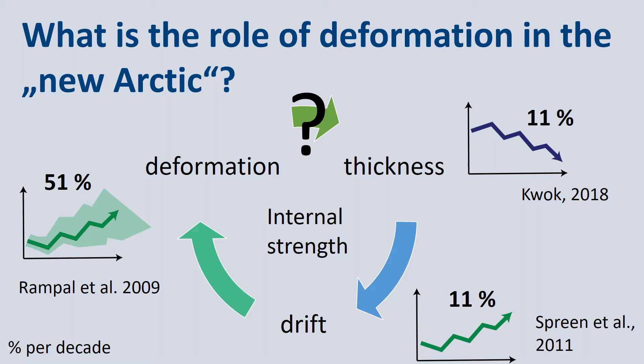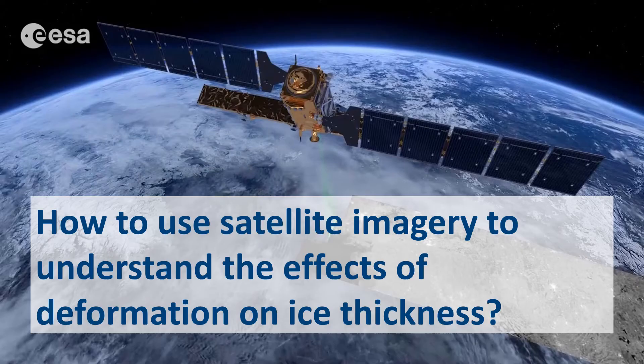To answer this question, we need a better understanding of CIS deformation and its impact on CIS thickness. Since CIS deformation is highly localized in space and time, observing it was challenging before. But now, with the fast repeat cycles of the SAR satellite missions, we have the opportunity to observe CIS deformation at high spatial and temporal resolution. The aim of my talk is to show how we can use satellite remote sensing to understand the effects of deformation on ice thickness.